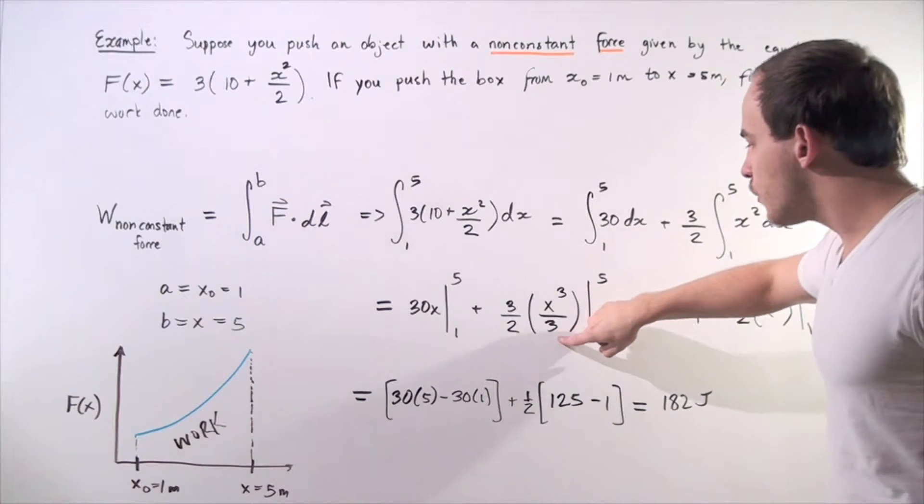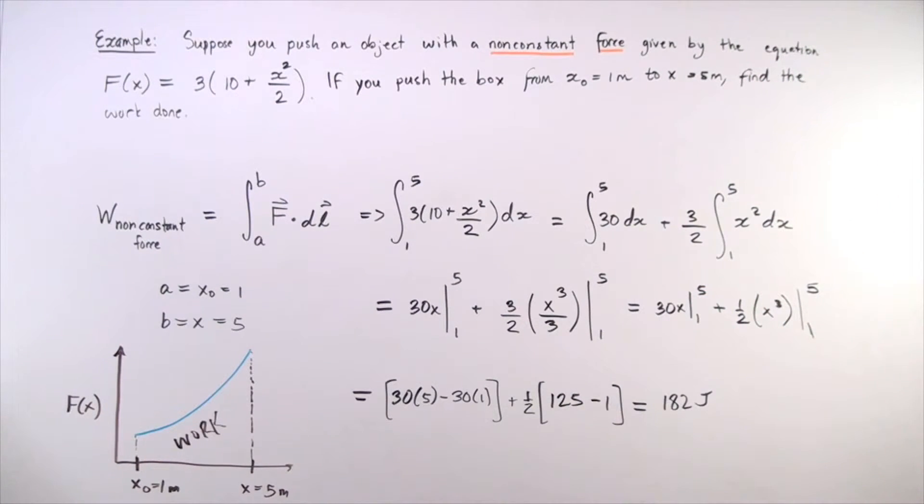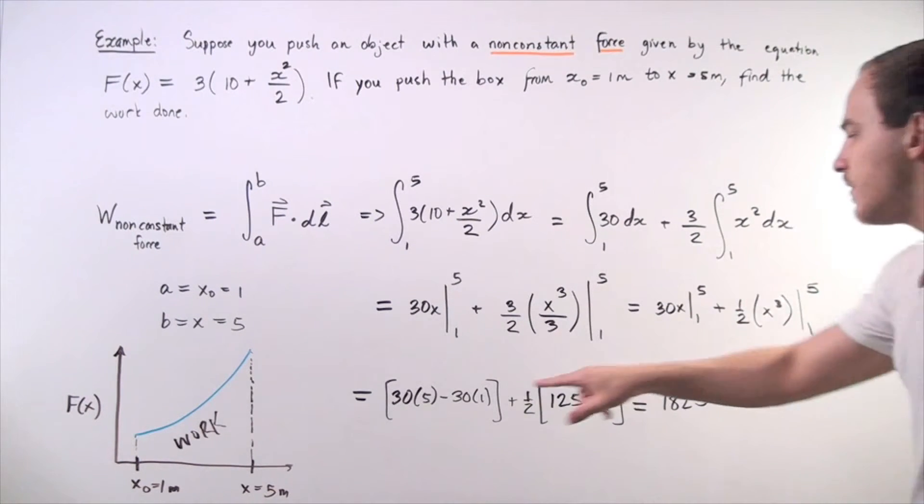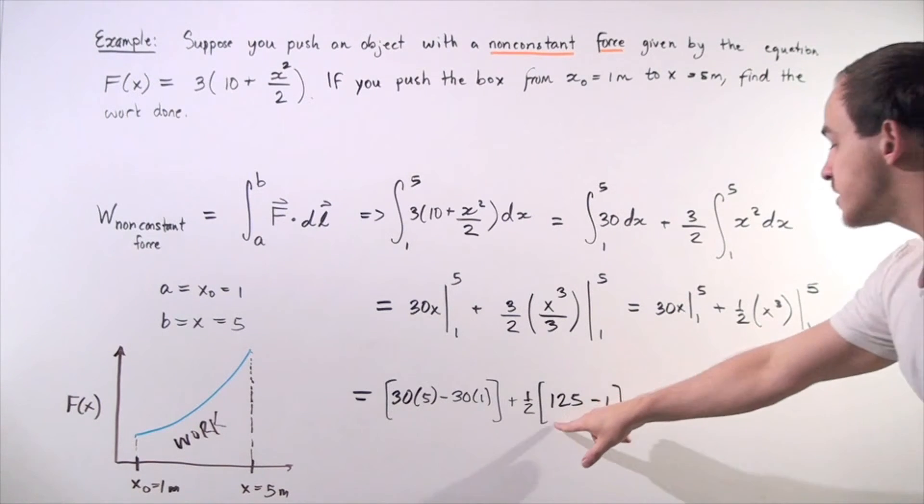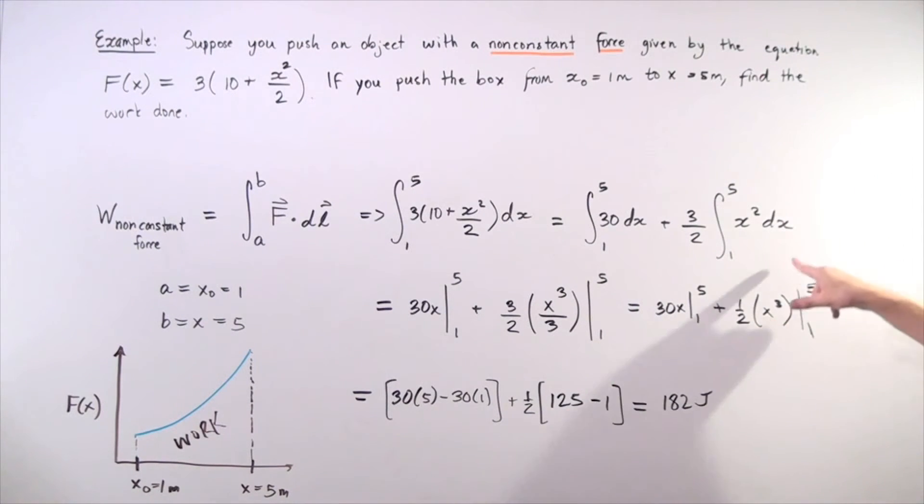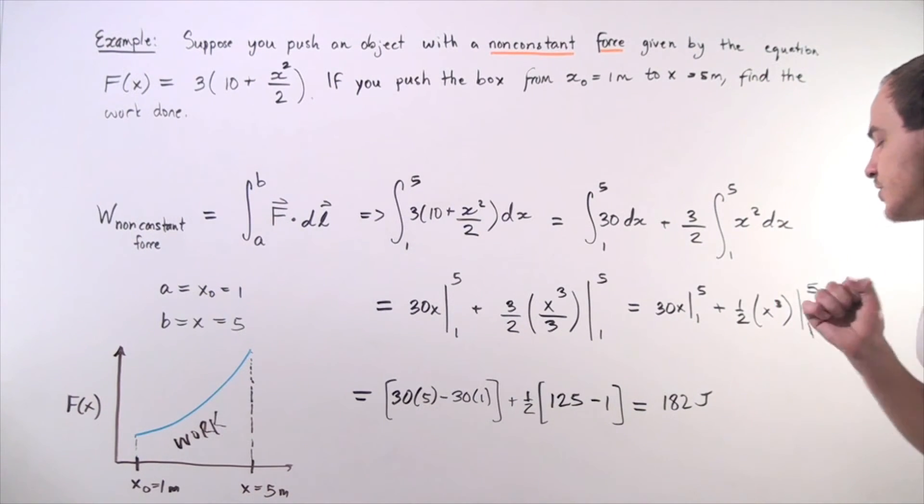Notice the 3's up here on top and bottom. So, we cross those out, we get the following result. And finally, we evaluate and we get, so, 30 times 5 minus 30 times 1 plus 1 half of, so 5 to the 3rd power is 125 minus 1 to the 3rd is 1, we get 182 joules.